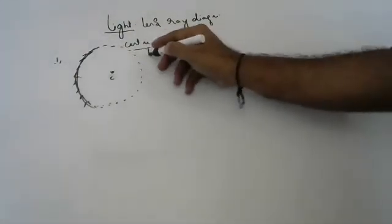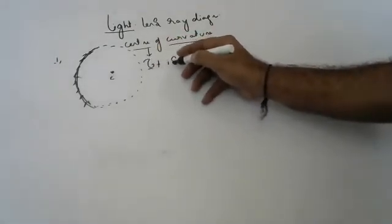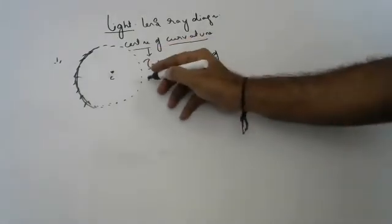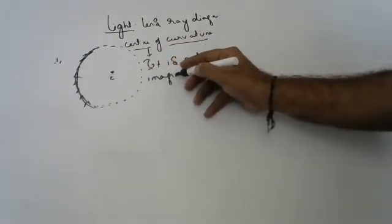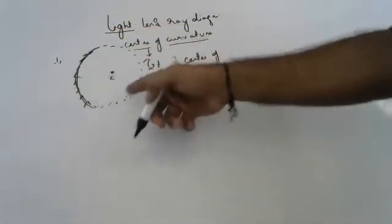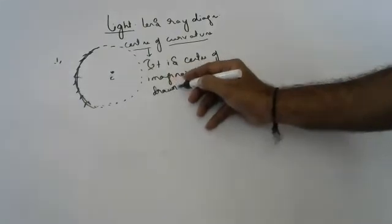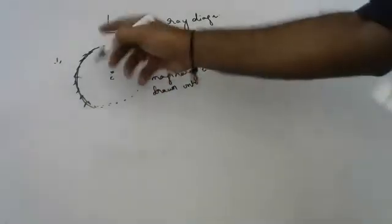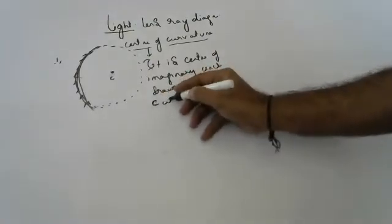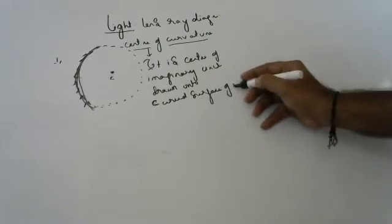How do we define center of curvature? It is the center of an imaginary circle drawn onto the curved surface of the mirror.